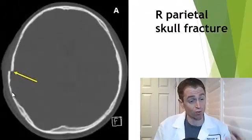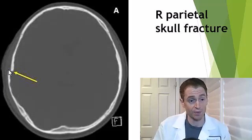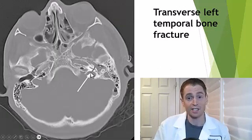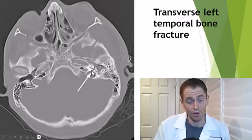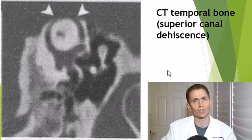CAT scans are also very good at looking at bone. Here is a parietal bone fracture on the right side with slight displacement. This is a transverse fracture of the left temporal bone — you can see a clear line going straight through the temporal bone.